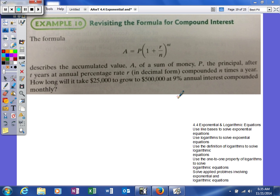We're just going to plug in. Before, we were plugging in for P, R, N, and T and figuring out what A is. This time we actually know what A is. We'll say $500,000 is what we're trying to get, and we're going to invest $25,000.